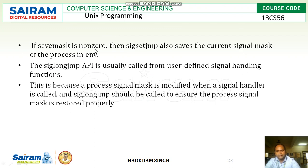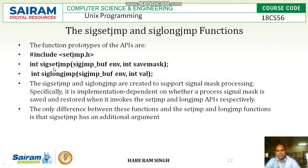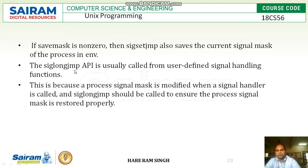If the save_mask value is non-zero, then sigsetjmp also saves the current signal mask of the process in the environment. The siglongjmp API is usually called from a user-defined signal handling function, because the process signal mask is modified when a signal handler is called, and siglongjmp should be called to ensure the process signal mask is restored properly.